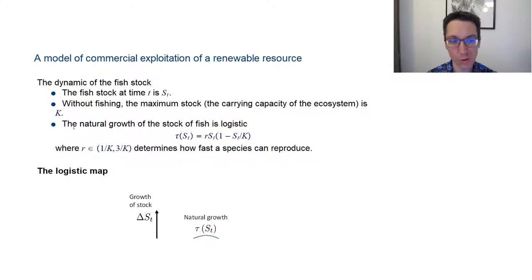Now, the natural growth of the fish stock is what we call a logistic map. It is τ(st), so that's the number of new fish at time t, or at any time. Basically, it's a function of the stock of fish I have, equal to r times st, that multiplies 1 minus st divided by K.